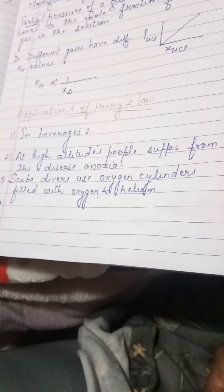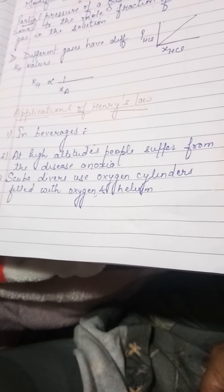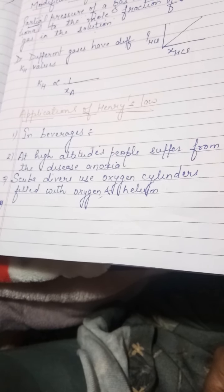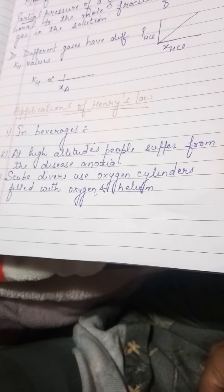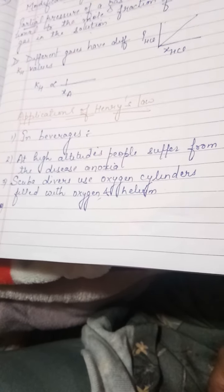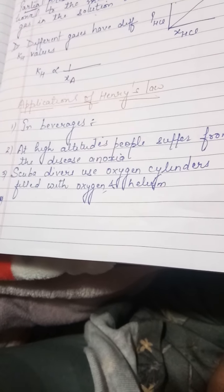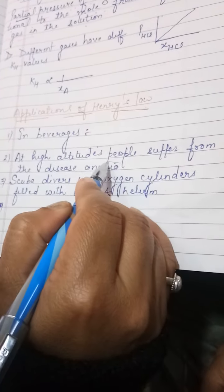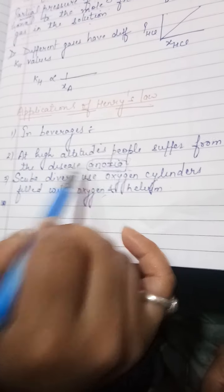At high altitudes, people suffer from a disease called anoxia. At high altitudes, the pressure is less, so the solubility of oxygen gas decreases. People become deficient in oxygen, feel weak, and their thinking ability is lowered. This disease is known as anoxia.